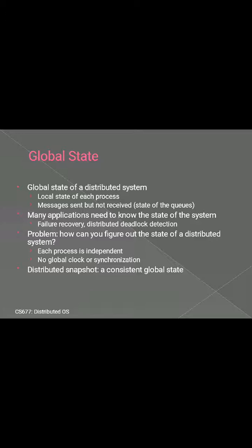Before we know what exactly the election algorithm is, we will see what is the global state. The global state of distributed systems consists of local state and the messages that are sent but never received or never delivered. The local states consist of only those records that form part of the database and exclude the temporary records used for computation.